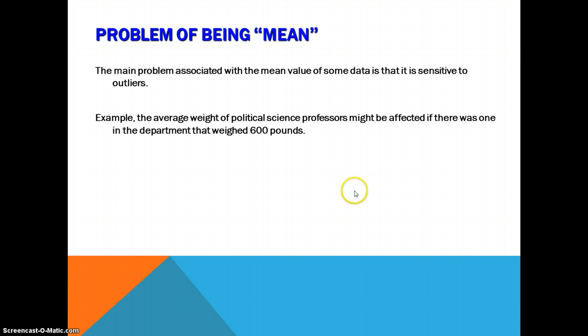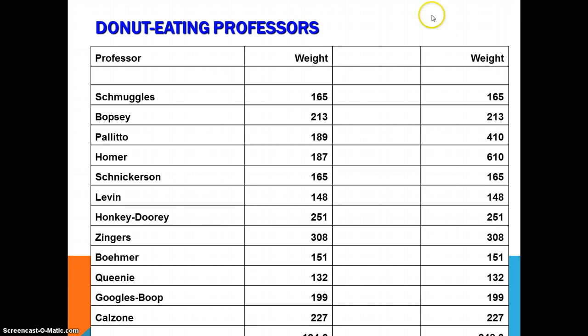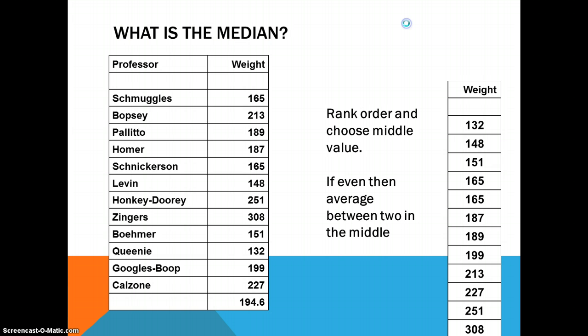And the mean can be affected by a value that is far outside of most of the other values. For example, if we look at the average weight, here's a data set of the average weight of political science professors. And you will notice that one of the political science professors weighs 600 pounds, far more than any other. He would be an outlier. This person would be an outlier, and it will influence the mean.